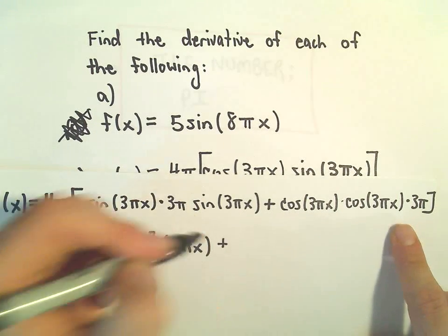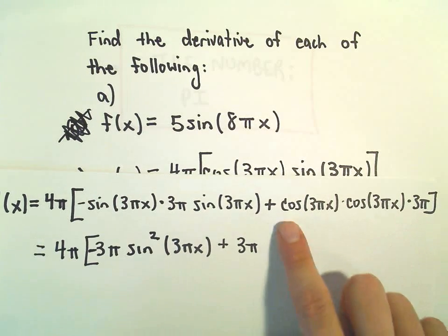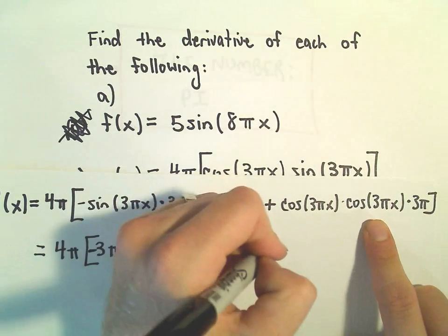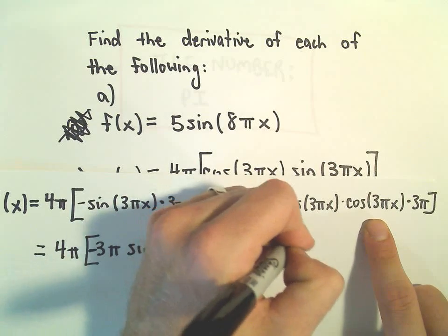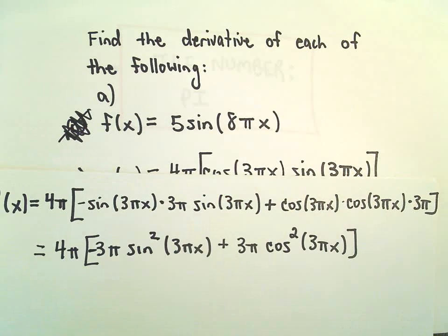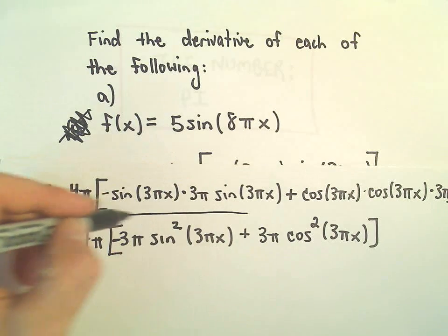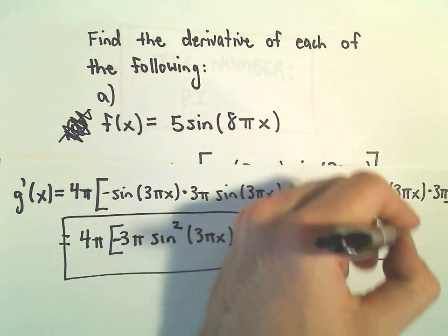Then on the second, our second term, again, we can pull the 3π. We have cosine of 3πx times cosine of 3πx. We can write that as cosine squared of 3πx. And I actually think we could factor out the 3π and maybe use an identity on this as well. But for now, let's just leave it like that.